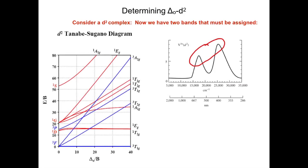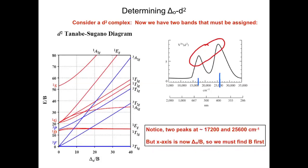We need to assign the peaks. We did that before. Then we need to find the lambda max of those two peaks. We need to come down and determine what is lambda max for each of our two peaks. When I did it, I found lambda max to be 17,000 wavenumbers and 25,600 wavenumbers.